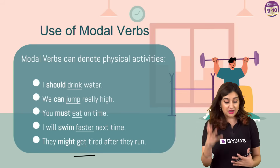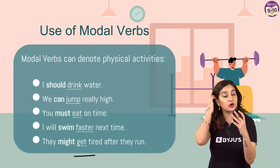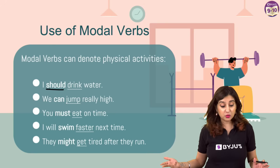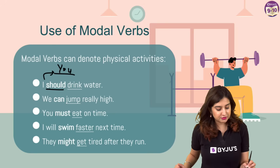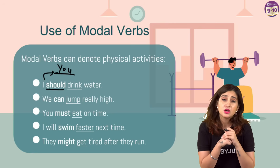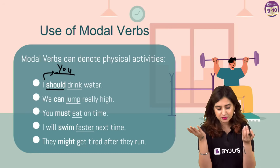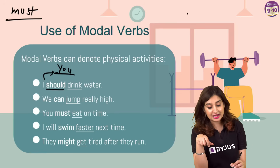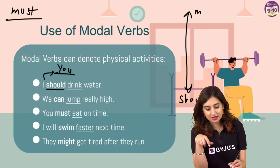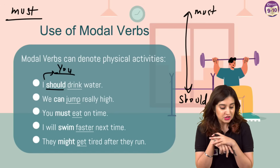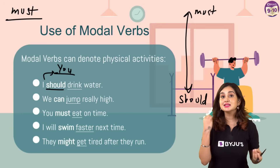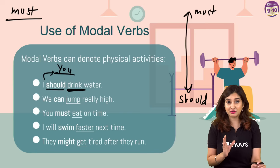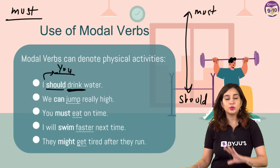If we are talking about physical activities, how do modals come into play? They can be used to give a suggestion - for example, should. 'I should drink water,' or changing to a different pronoun, 'you should drink water' becomes a suggestion you're giving to someone else. We're all aware that should is used to give a suggestion. Another modal used to give a suggestion is must, but the difference between should and must generally lies in intensity - if should is at the bottom, must is at the top.